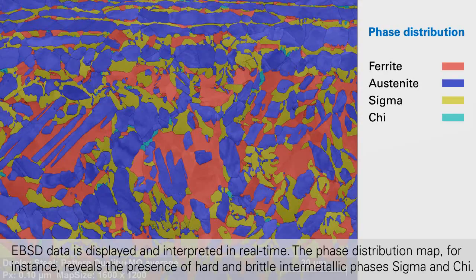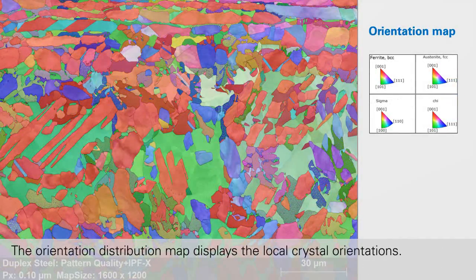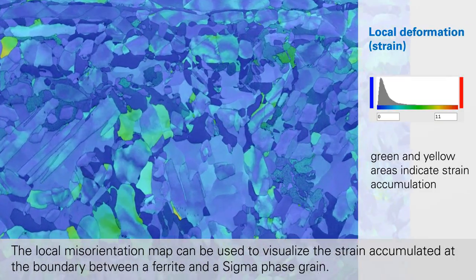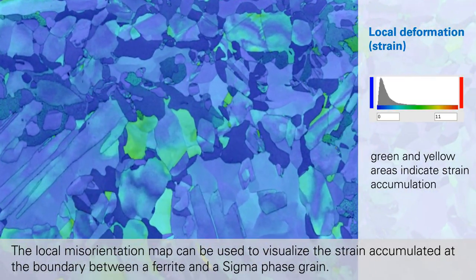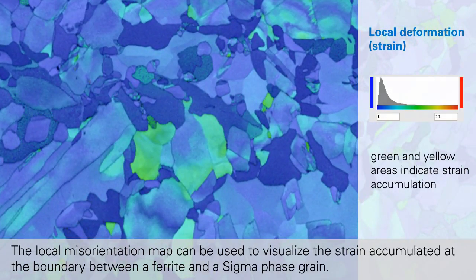The phase distribution map, for instance, reveals the presence of hard and brittle intermetallic phases sigma and chi. The orientation distribution map displays the local crystal orientations. The local misorientation map can be used to visualize the strain accumulated at the boundary between a ferrite and a sigma phase grain. In this example, the green and yellow areas indicate the strain accumulation.